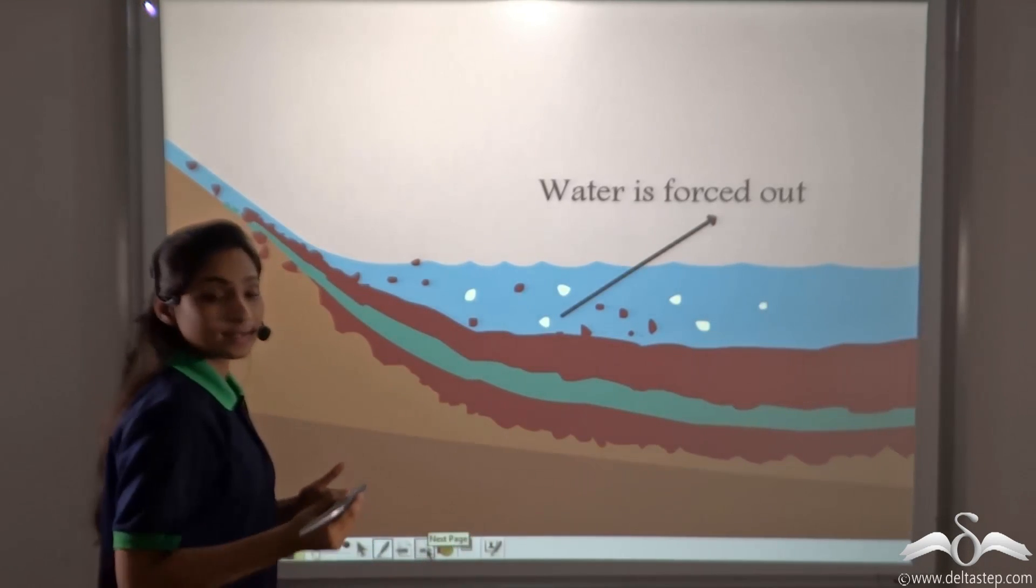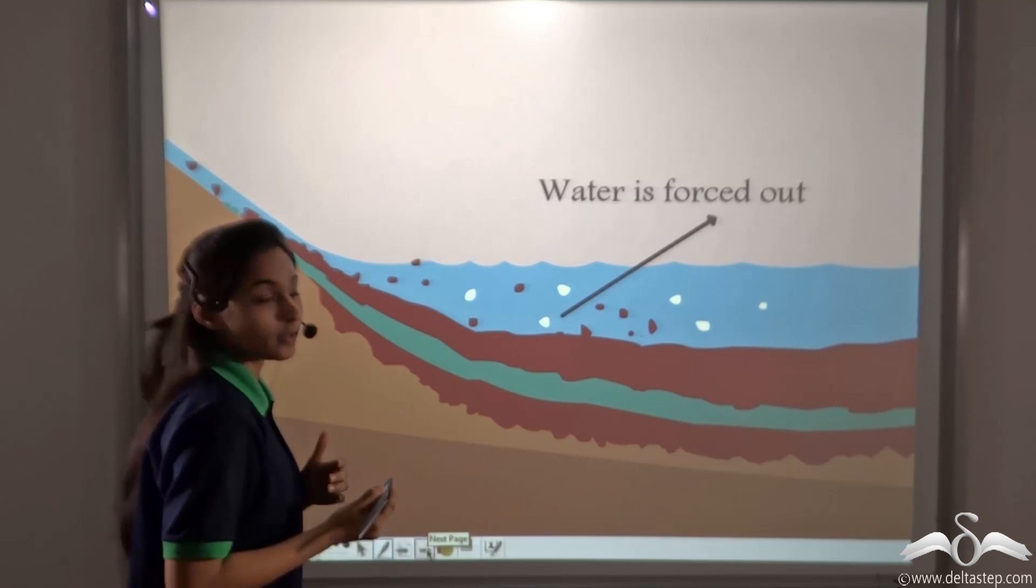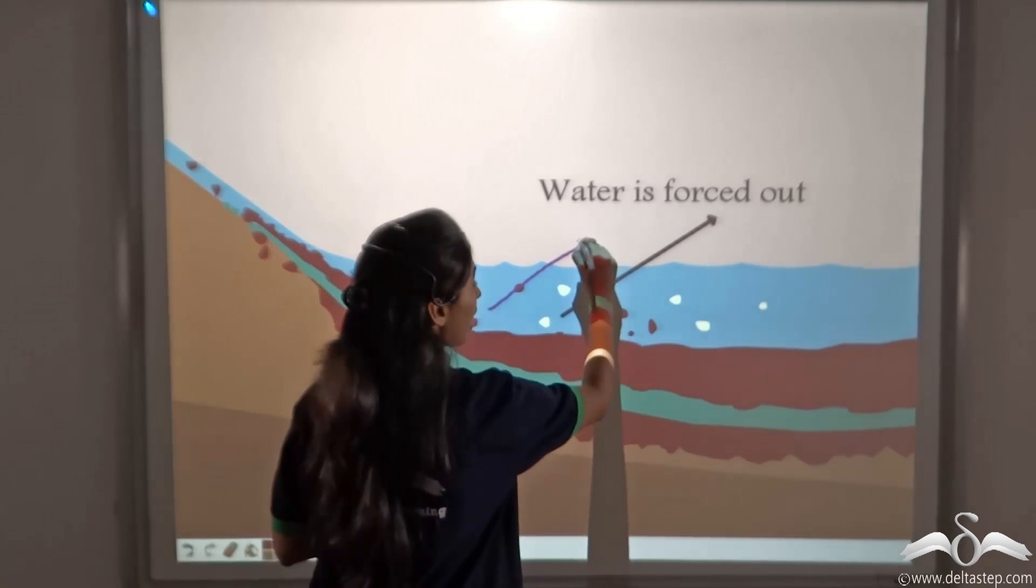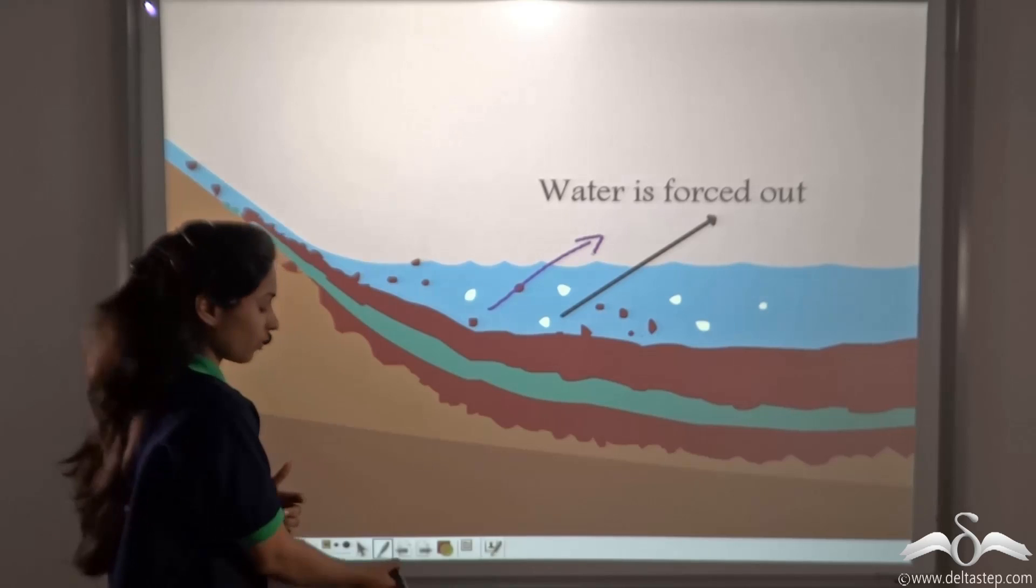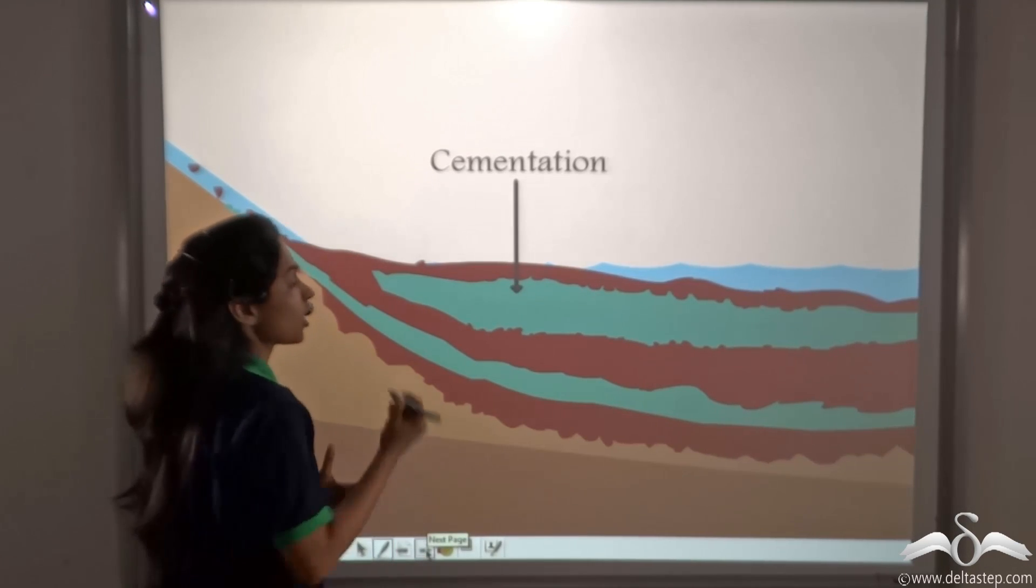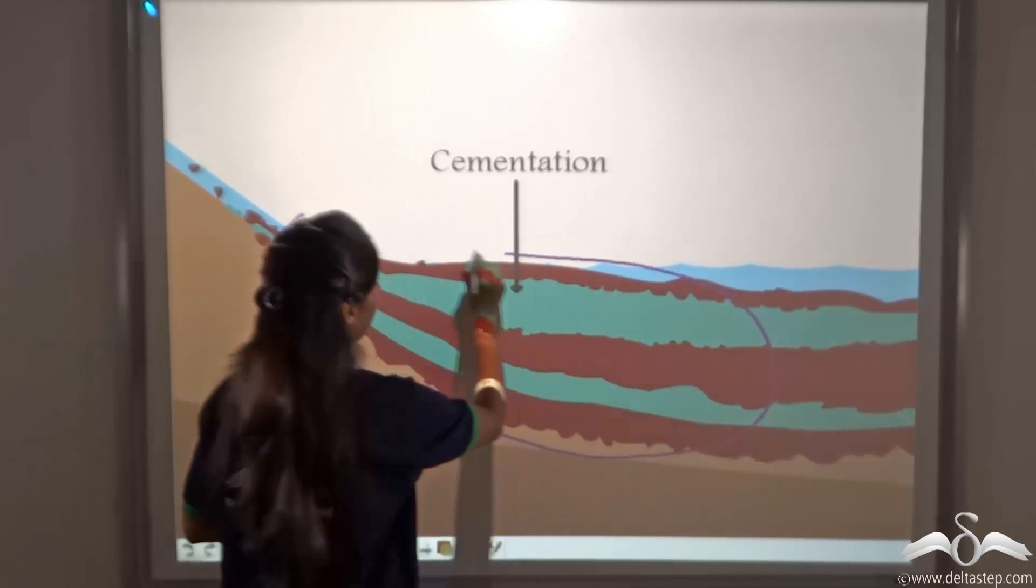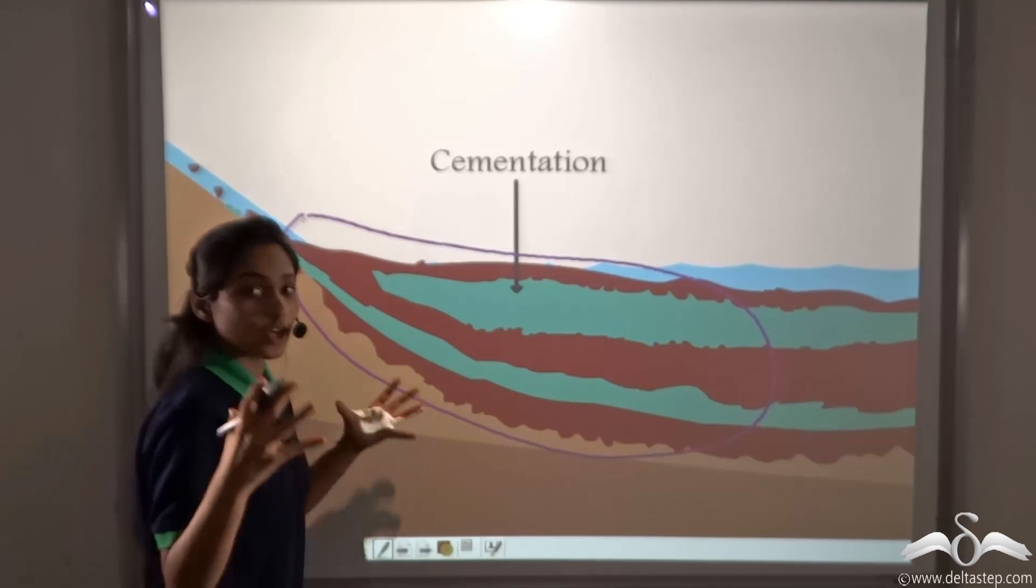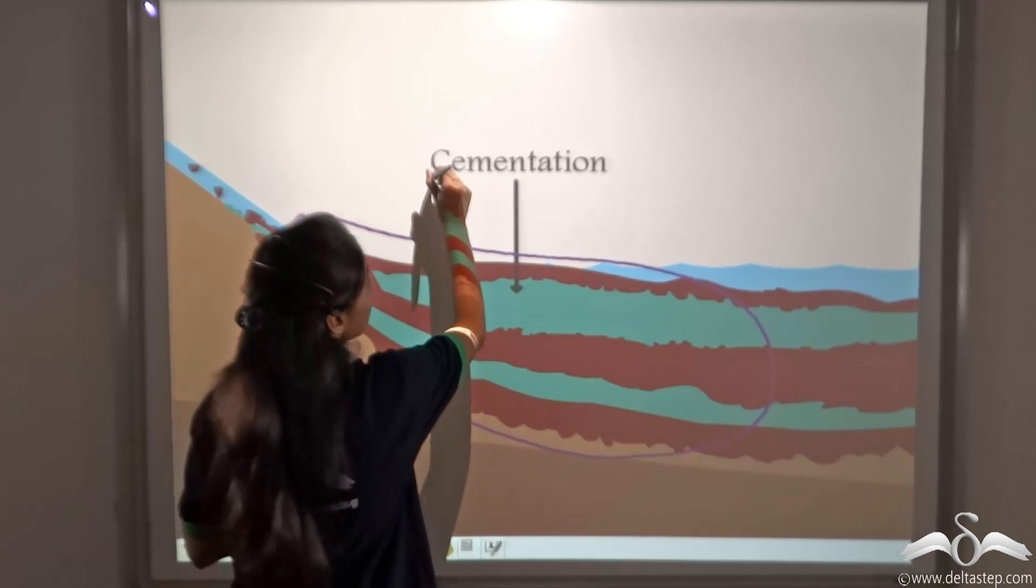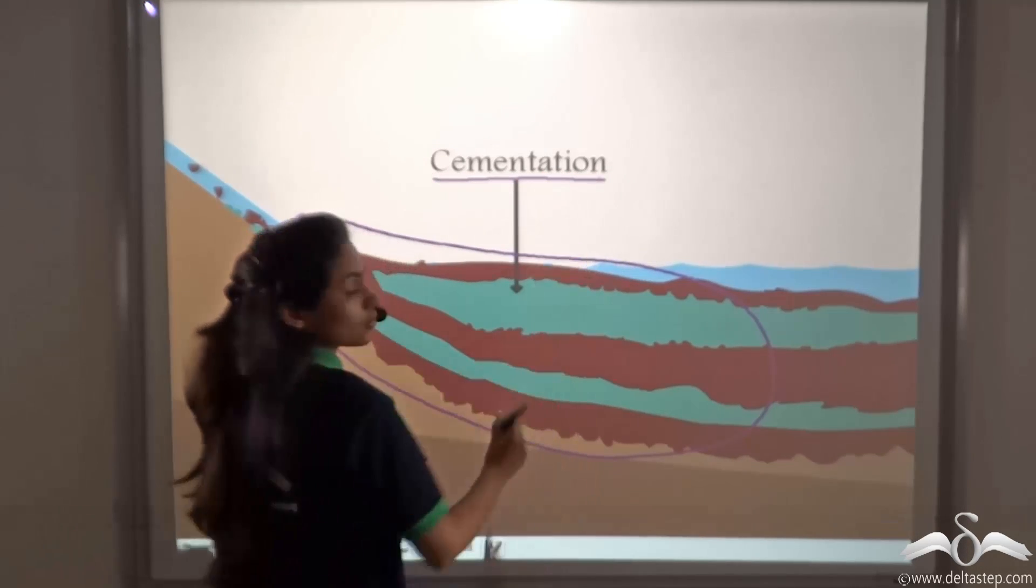As the layers get squeezed together, any water mixed with the sediments is forced out. Salt crystals glue these layers together. The squeezed layers get glued together to form rocks. This process is called cementation.